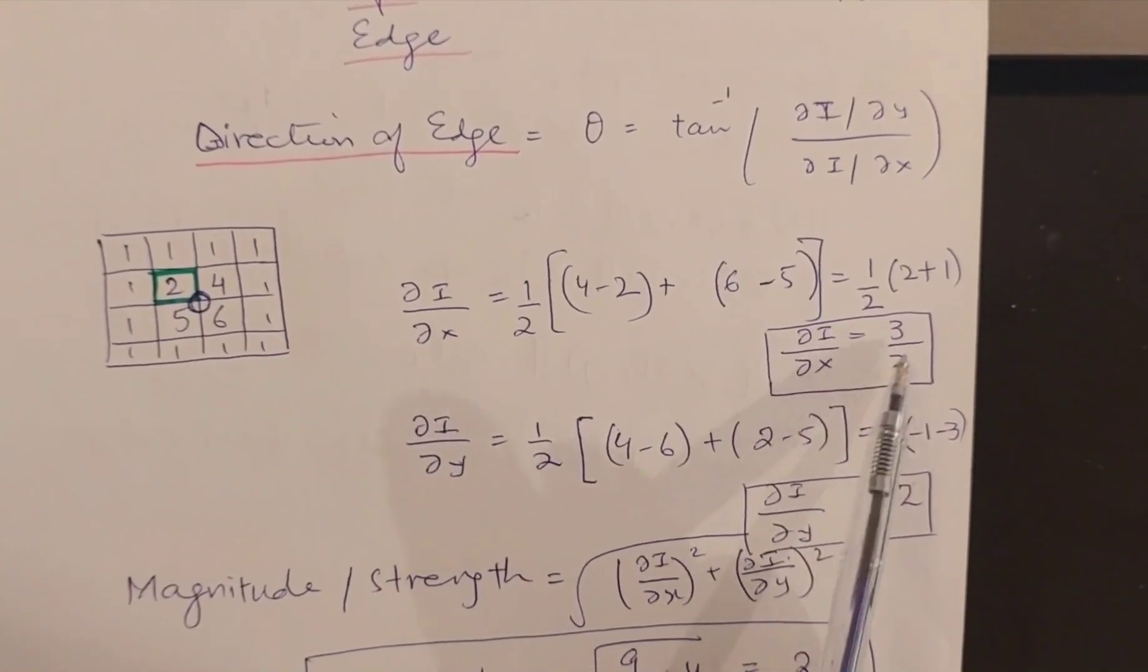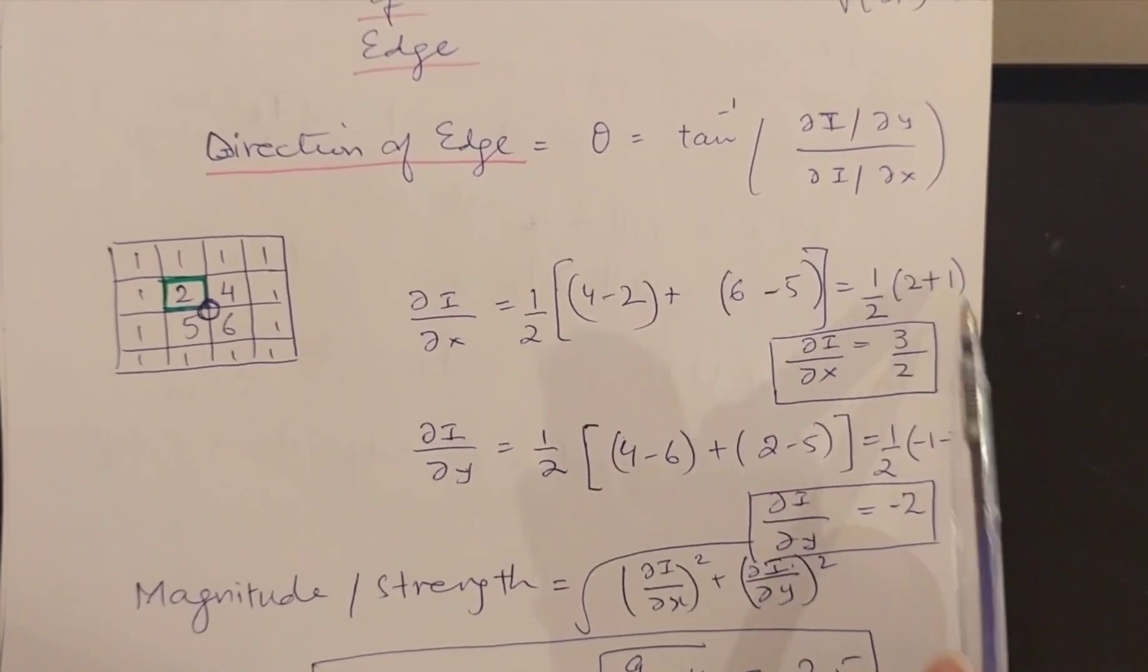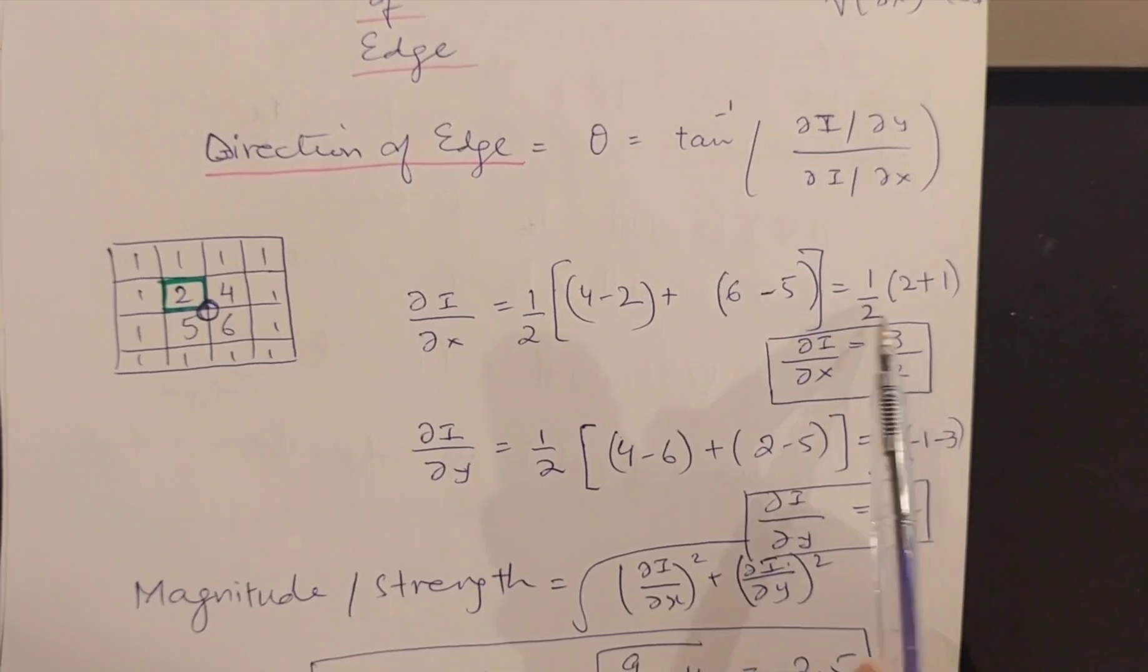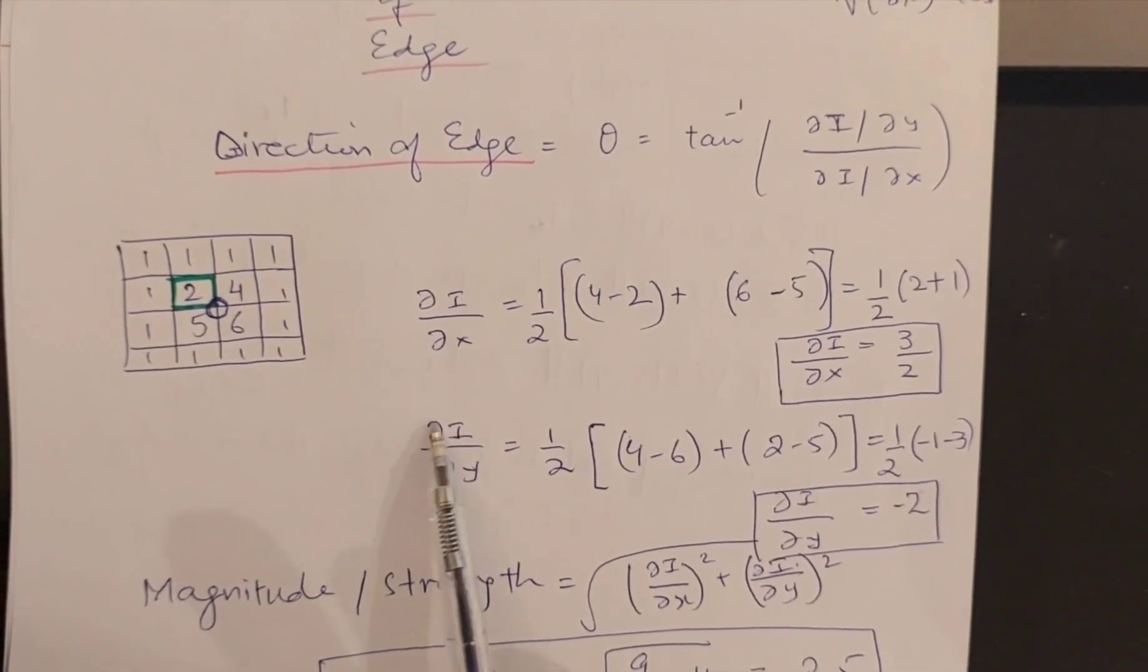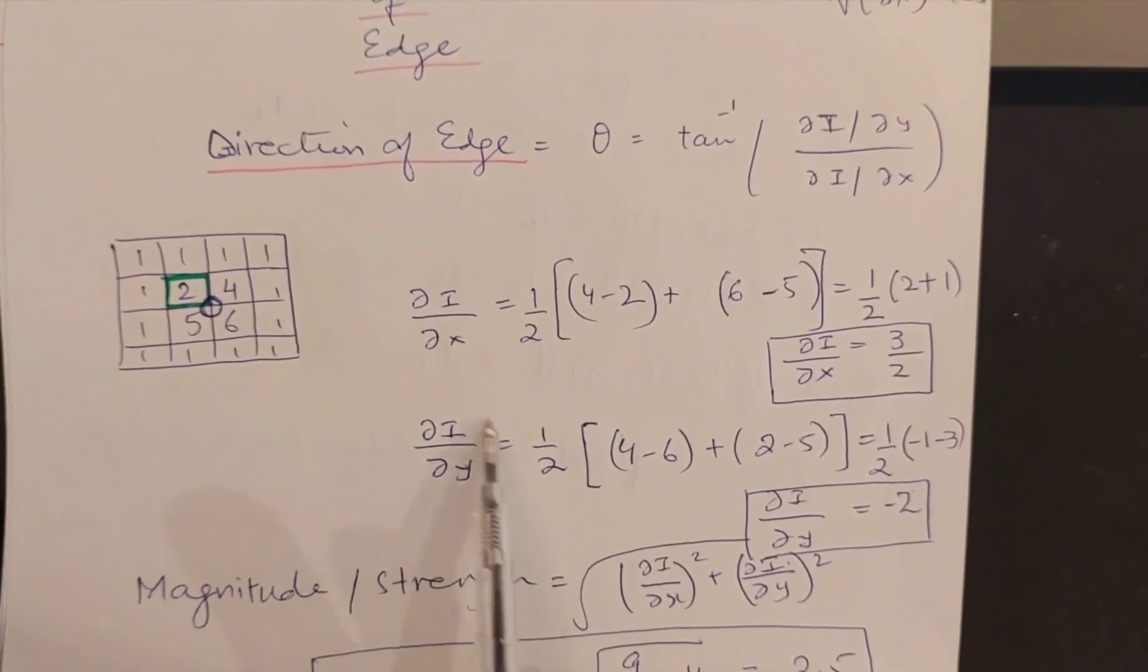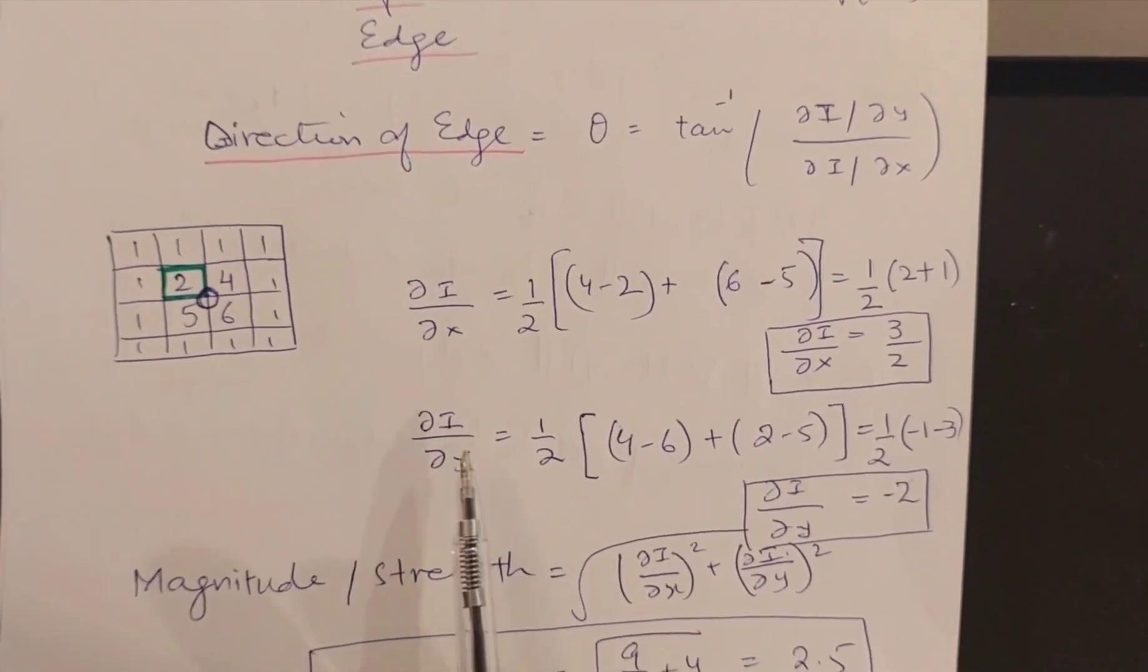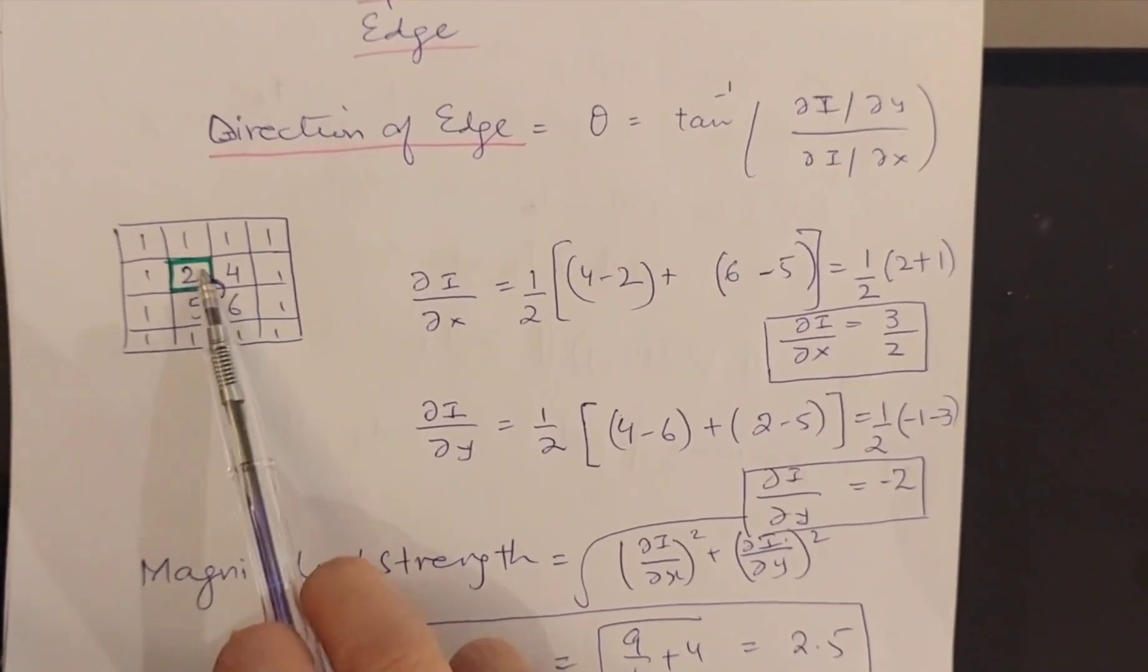It is coming to be 3 over 2 because this is 2, this is 1, 2 plus 1 is 3, and divided by 2, so it is 3 by 2. Now this del of I by y component, or the y derivative, is calculated by 4 minus 6 and 2 minus 5.